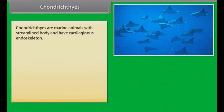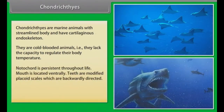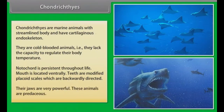Chondrichthyes are marine animals with streamlined body and cartilaginous endoskeleton. They are cold-blooded animals — that is, they lack the capacity to regulate their body temperature. Notochord is persistent throughout life. Mouth is located ventrally. Teeth are modified placoid scales which are backwardly directed. Their jaws are very powerful and these animals are predaceous.